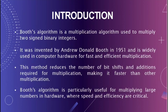Hello everyone, today I would like to talk about Booth's algorithm, a fast efficient method for multiplying two binary numbers. The algorithm was developed by Andrew Donald Booth in 1951 and has since become a cornerstone of modern computer arithmetic. One of the advantages of Booth's algorithm is that it reduces the number of arithmetic operations required to perform a multiplication.